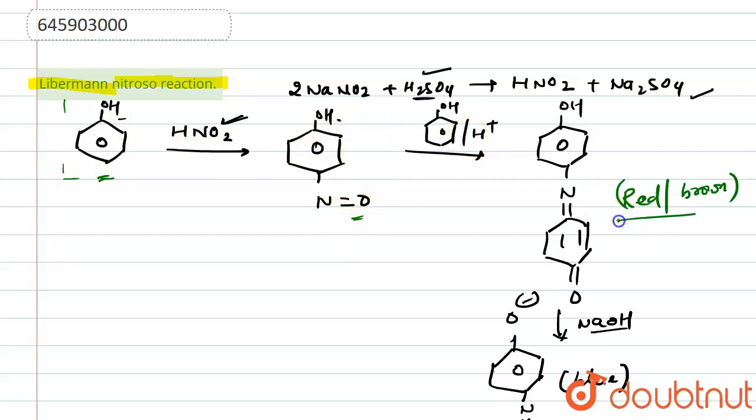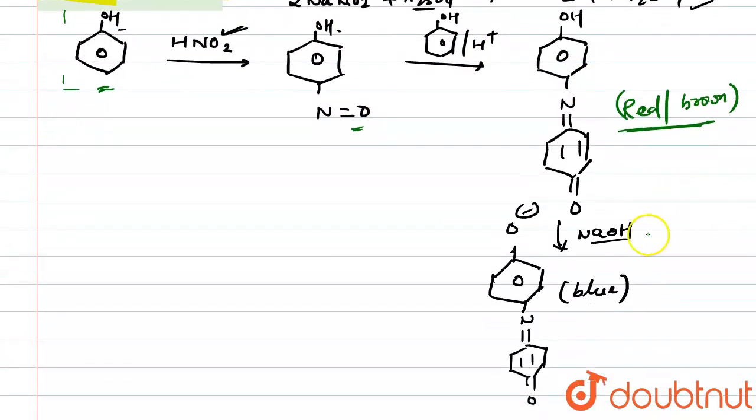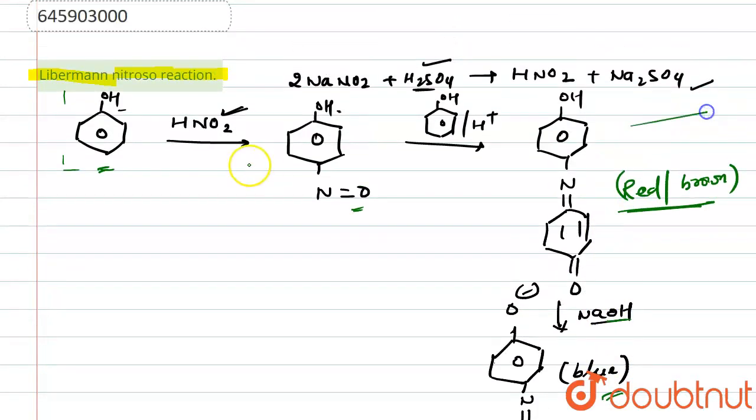So red or brown colored compound is formed, and that red brown compound, if again reacting with NaOH, blue colored compound is formed. If these two colors are showing, that means phenol is present. That is called the test of phenol. So I hope you understand the whole concept, thank you.